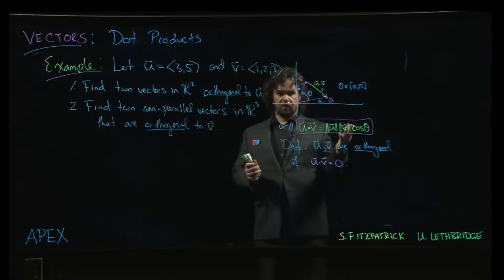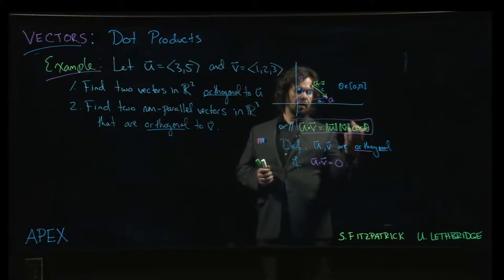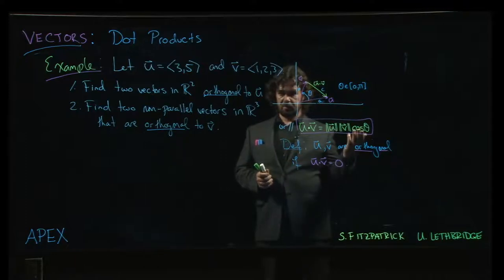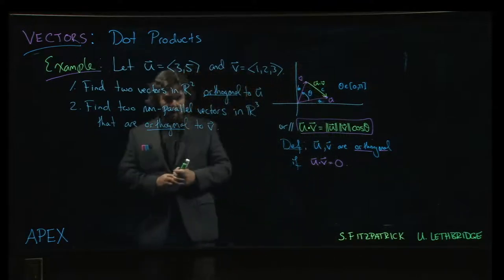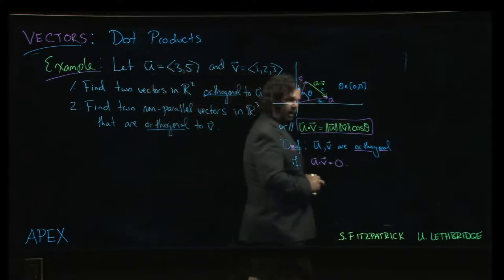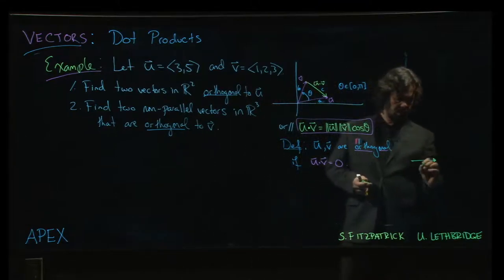Observing that if the dot product is zero, what does that tell us about the angle? If the two vectors themselves are not zero, then cosine of the angle has to be zero, and the only value of theta between zero and pi for which cos theta equals zero is pi over two, which is a right angle.